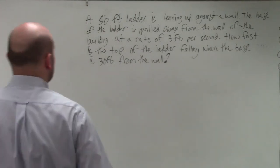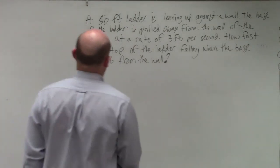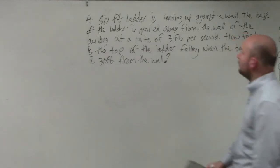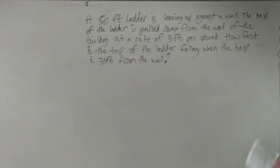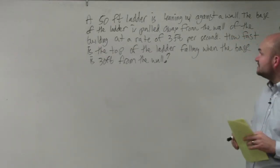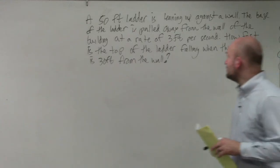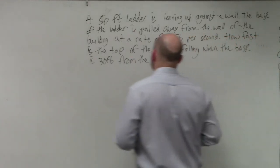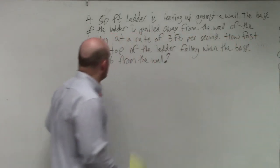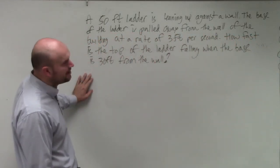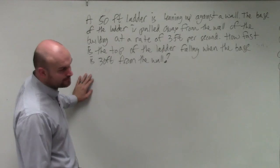In this problem, a 50-foot ladder is leaned up against a wall. The base of the ladder is pulled away from the wall at a rate of 3 feet per second. How fast is the top of the ladder falling when the base is 30 feet from the wall?